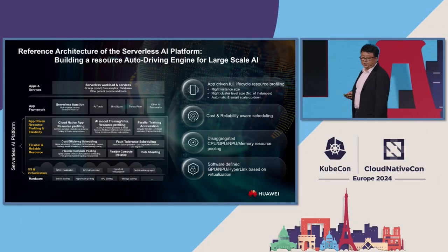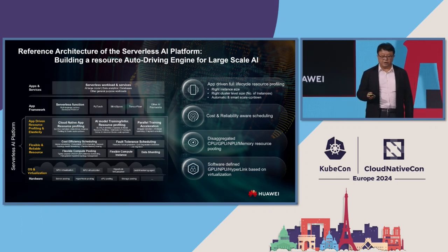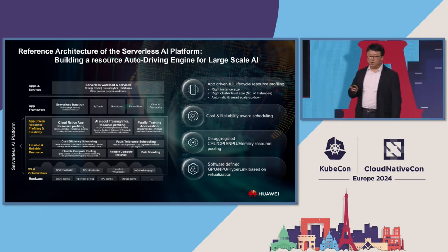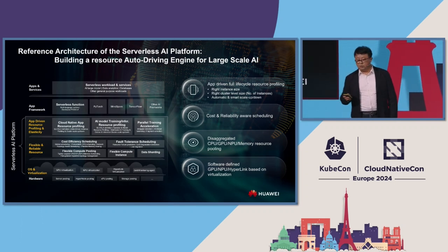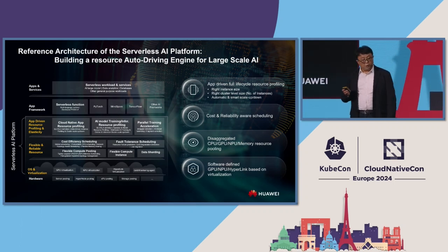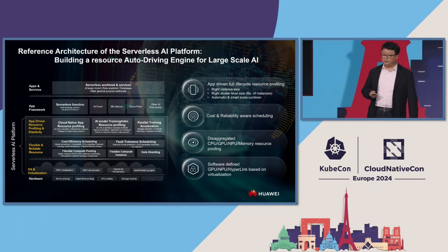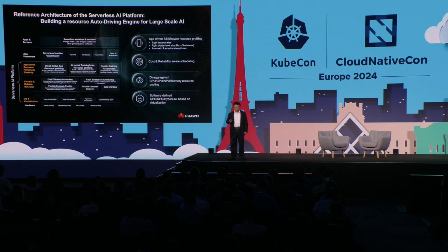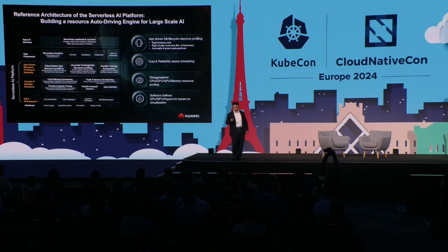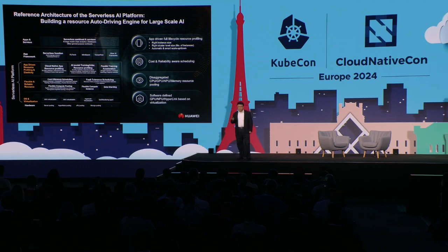Let's take a look at the reference architecture of the Serverless AI platform. The key idea is to build a resource auto-driving engine for large-scale AI based on three layers. The bottom layer focuses on runtime OS and virtualization so that CPU, GPU, and high-speed network resources can be divided into fine granularity with right sizing determined by resource profiling of AI training and inference workloads. The middle layer accomplishes control-plane smart scheduling of multi-tenant fine-granular resources mapped to underlying physical resource pooling spanning multiple data centers, maximizing resource utilization while satisfying app-layer performance SLA. The upper layer provides app-driven resource profiling and elasticity, bridging the gap between app and resource using both theoretical simulated performance modeling and monitored performance data of large-scale AI training and inference workloads.